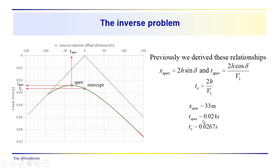And not sure what you got for that. These are the numbers that I got. I think maybe when I originally picked this, it was a little bit too high. So that's going to change our results. We'll talk about error here in a minute. But I got 33 meters for x apex, 0.024 seconds for t apex, and 0.0267 seconds for t0. So again, the question is, what did you get?